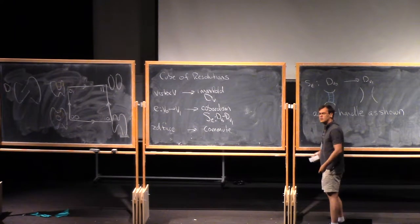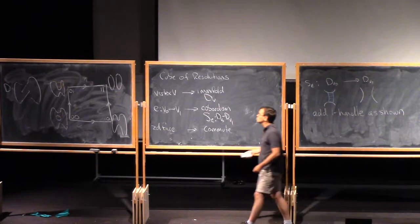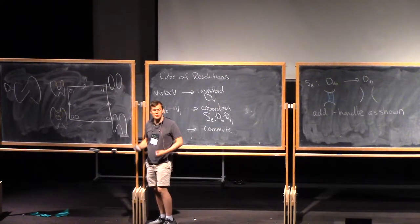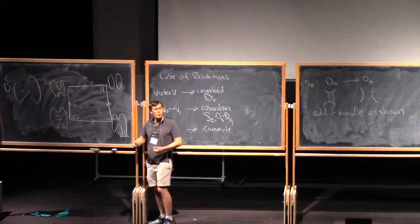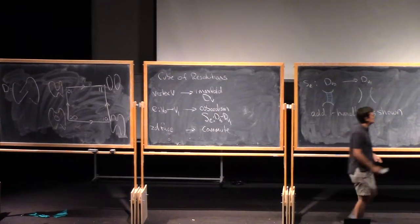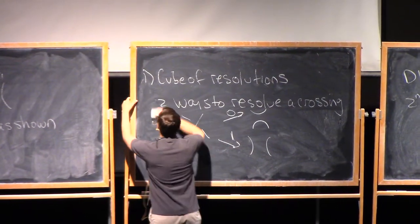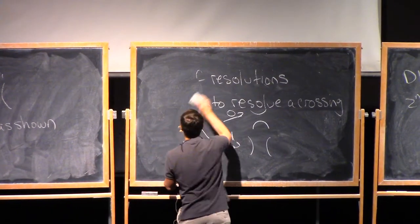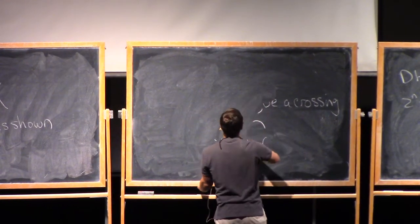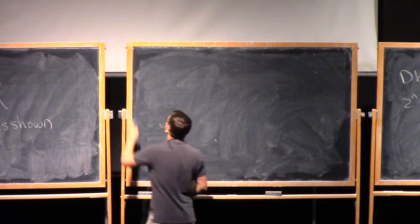All right, so now we have the cube of resolutions. It's this cube. All the vertices are decorated by one-manifolds, and all the edges are decorated by cobordisms between them. So now what we can do is we can apply a TQFT. What does that mean?